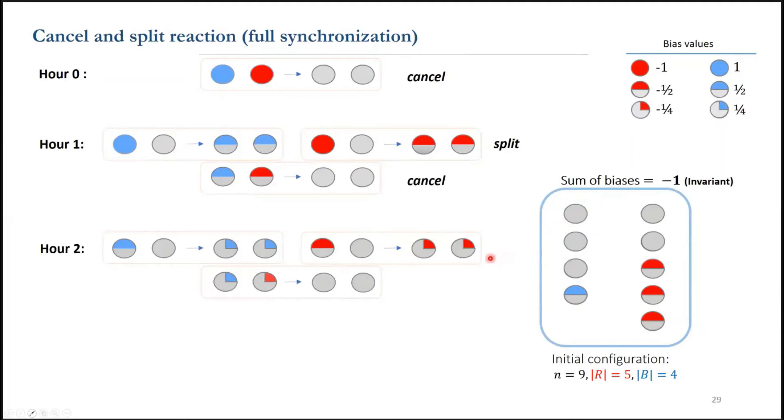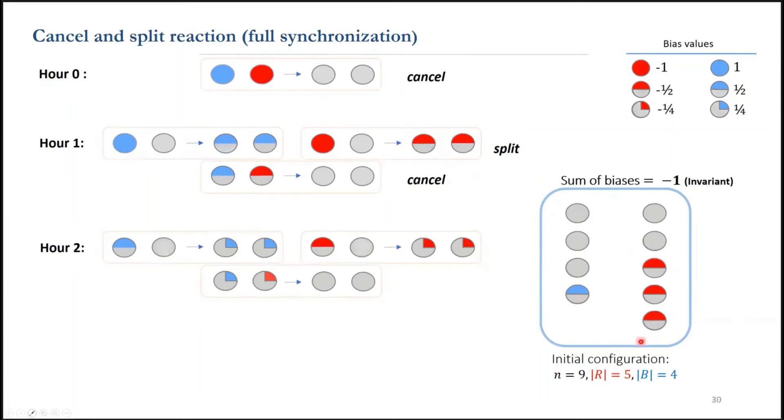Thus, at the end of hour 1, the agent's absolute bias value is at most 1 half, and by the end of hour 2, the agent's absolute bias value will be at most 1 fourth. In general, by the end of hour i, the agent's absolute bias value will be at most 1 over 2 to the i.